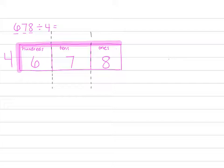When we divide, we always start in the largest place. In this problem, this is the hundreds place. So we have 600 divided by 4.